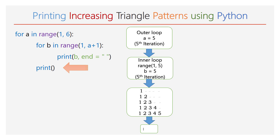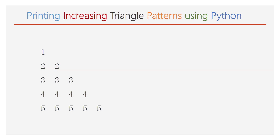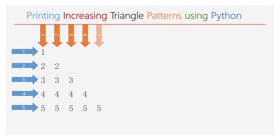One more type of increasing triangle pattern. There are 5 rows with 5 columns. In the first line, only 1 is printed. In the second line, all 2's are printed. Similarly, in the fifth line, all 5's are printed. Based on that, you need to write the coding — take 2 for loops.